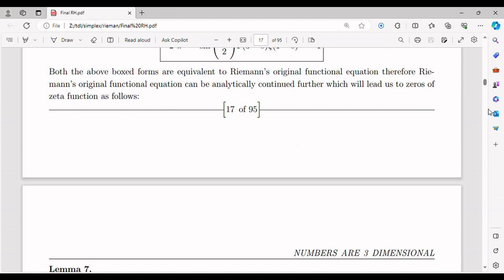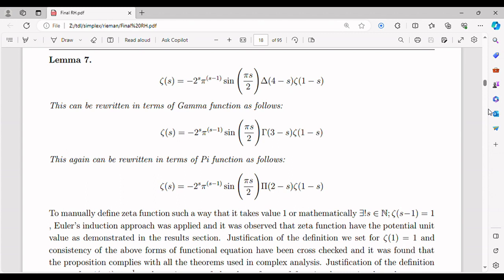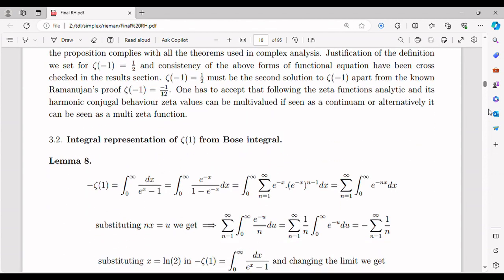Analytically continuing zeta function to an extended domain, poles and zeros of zeta values are redefined. Other prime conjectures like Goldbach conjecture, twin prime conjecture etc. are also proved in the light of new understanding of primes and numbers as a whole.